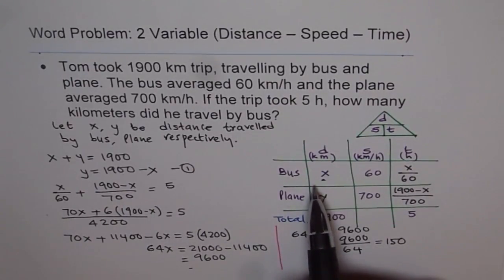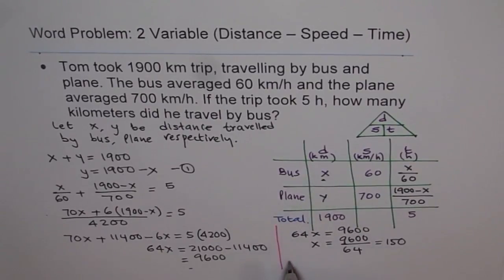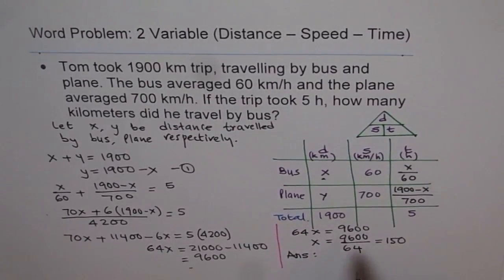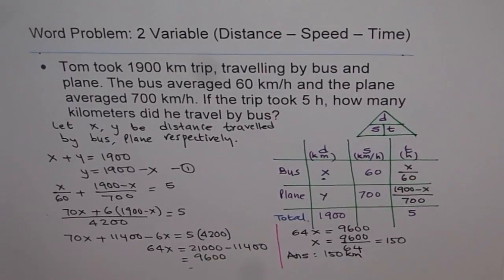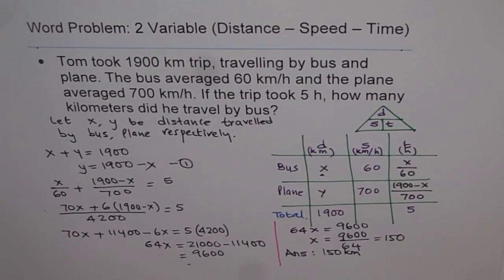And what is X? X is the distance traveled by bus. And now we can write down our answer. That is, distance traveled by bus is 150 kilometers. So that is how you're going to solve it.